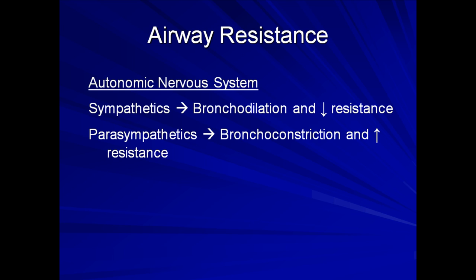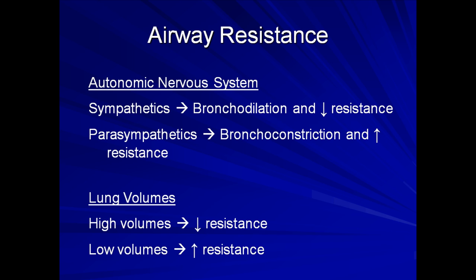The second less prominent physiologic process is related to lung volume. At higher lung volumes, radial traction exerted on the bronchi and bronchioles pulls the airways outward, leading to decreased resistance. At lower lung volumes, when the outward radial traction on the airways is less, their natural elastic recoil takes over, leading to a decreased radius and thus increased resistance.